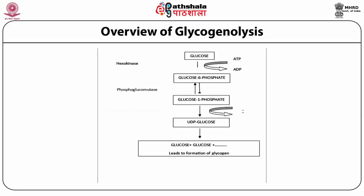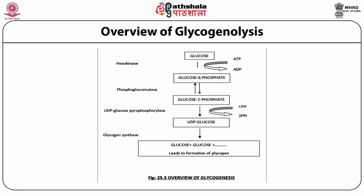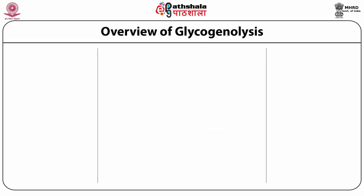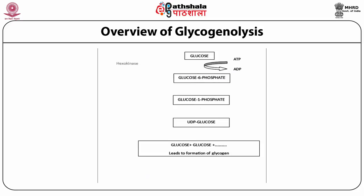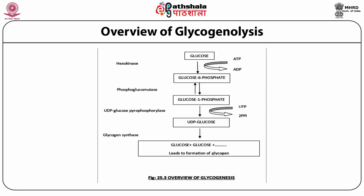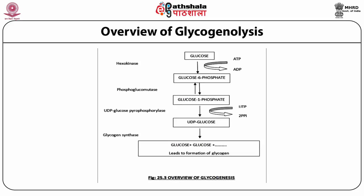UDP glucose pyrophosphorylase catalyzes the formation of UDP glucose from UTP and glucose-1-phosphate. Glycogen synthase transfers the glucose residue from UDP glucose to the non-reducing terminal residue of glycogen, forming an alpha-1,4 glycosidic bond at the C4 end. Glycogen synthase catalyzes only alpha-1,4 glycosidic bonds, resulting in the formation of alpha-amylose. Branching is catalyzed by a separate enzyme called branching enzyme, also known as amylo-1,4 to 1,6 transglycosylase.